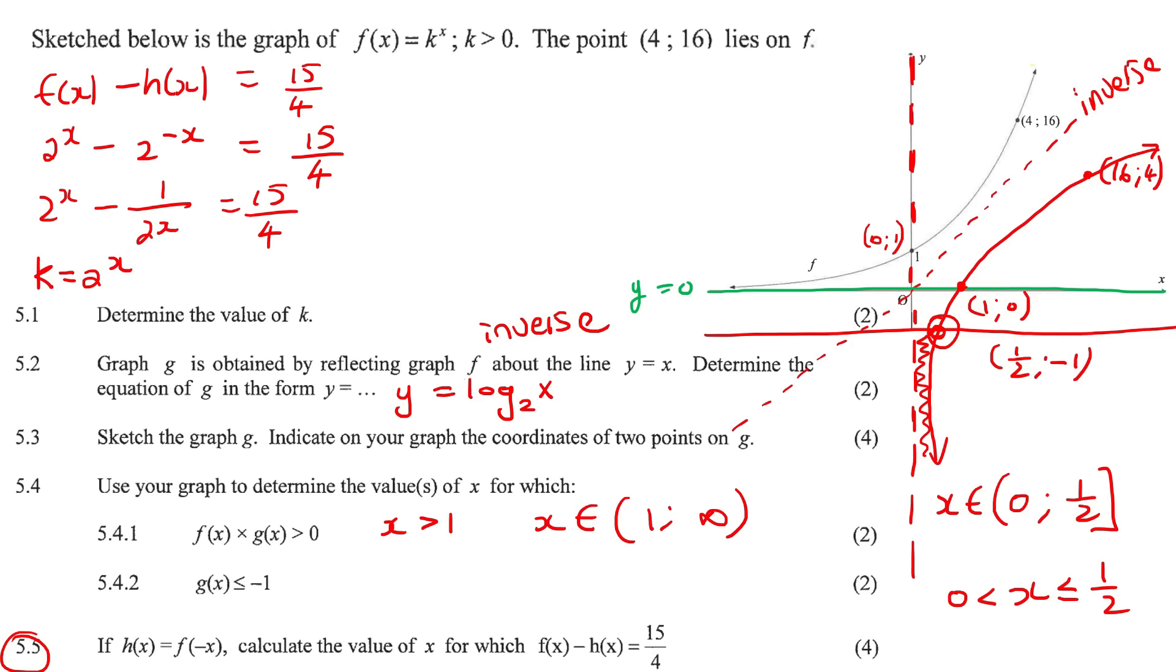The other way would have been to get a common denominator. But then you probably would have switched over to k method anyways. So if k is equal to 2 to the x, then this is going to be k minus 1 over k equals 15 over 4. Now we need to get a common denominator, which would be 4k. So that means this needs to be multiplied by 4k top and bottom. This one needs to be multiplied by 4, and this one needs a k top and bottom. And so here we end up with 4k squared minus 4 equals 15k. We don't need the denominators anymore because in math, when you have an equation and the denominators are the same, then you no longer need those denominators.